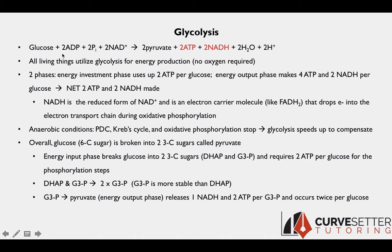Glycolysis has two phases. It has an energy investment phase, which actually requires two ATP per glucose, and then it has an energy output phase, which makes four ATP and two NADH per glucose. That's why the net production of ATP is just two — you see in the net chemical equation we just have two ATP, even though it actually makes four, because it uses up two.